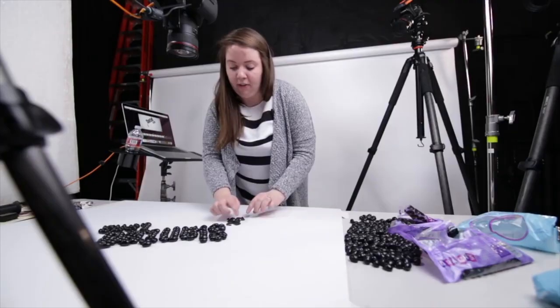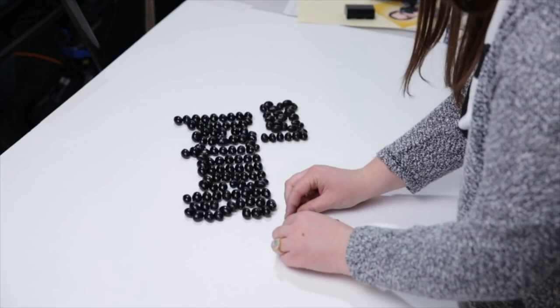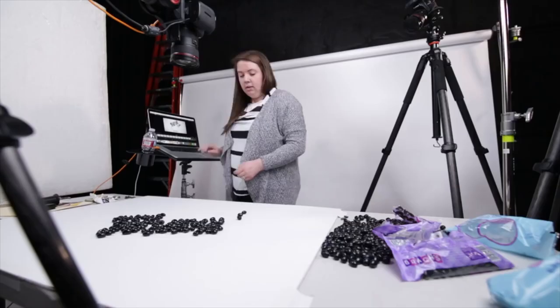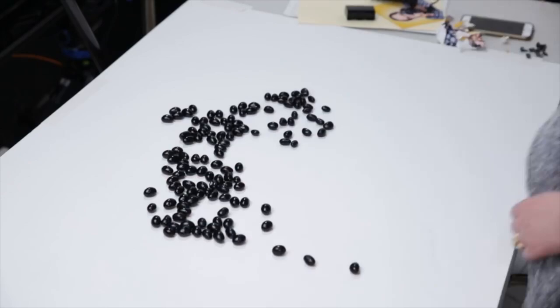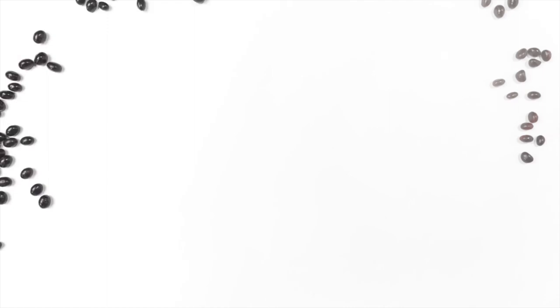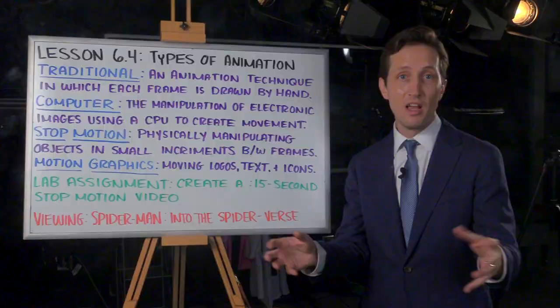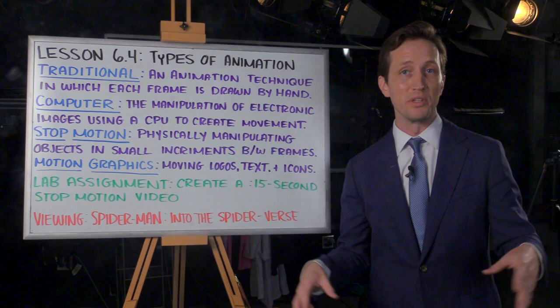Here's just one more tip to remember. If your stop motion involves the construction of something — a Lego set, a model car, whatever — it's easier to start with the finished model and then disassemble it during production. That way you can just reverse the order of the images and it'll look like the model is being built. Believe me, deconstructing a model or a scene is a lot easier than building one.